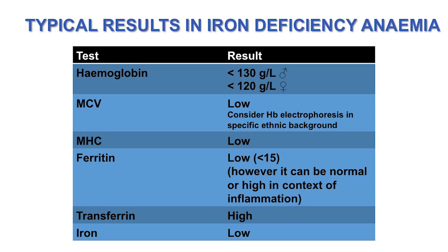You can see a low MCV and MCH in other causes of anemia such as hemoglobinopathies like thalassemia or in anemia of chronic disease. In patients with a disproportionately low MCV and an appropriate ethnic background, you may consider checking hemoglobin electrophoresis. A ferritin of less than 15 confirms iron deficiency, but ferritin is an acute phase protein and can be falsely raised in inflammation, so checking transferrin and serum iron can also be helpful.